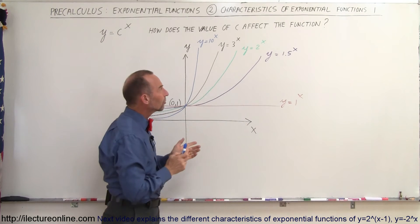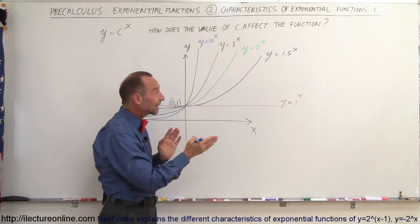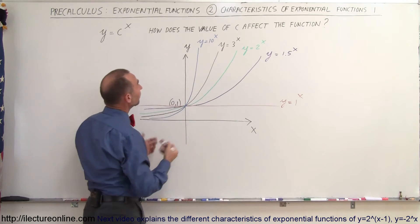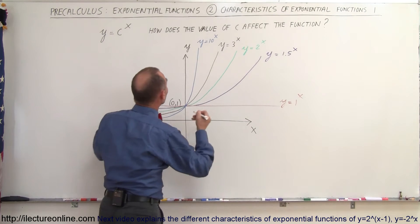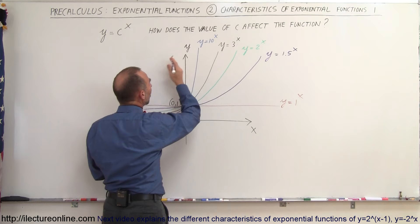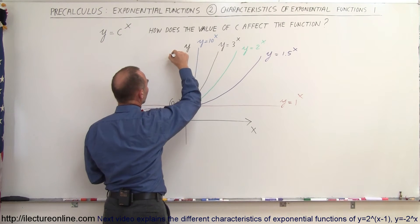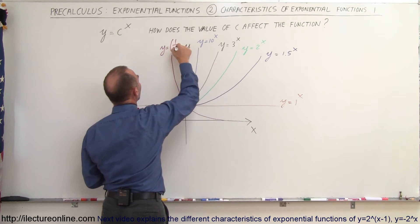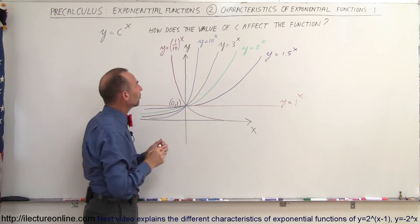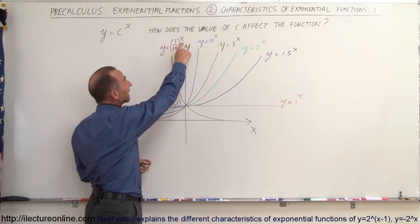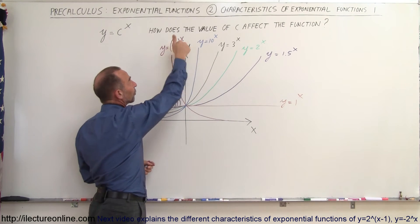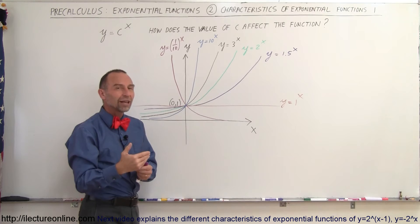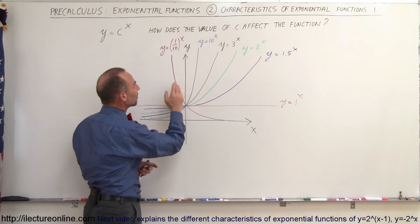What happens when the constant becomes a number less than 1? It kind of reverses the function. For example, y equals 1 over 10 to the x power — it looks like the mirror image of y equals 10 to the x power. That makes sense because when x becomes a negative number, it reverses: y equals 1/10 to the minus 1 power equals y equals 10 to the positive 1 power. So it's basically the mirror image about the y-axis.